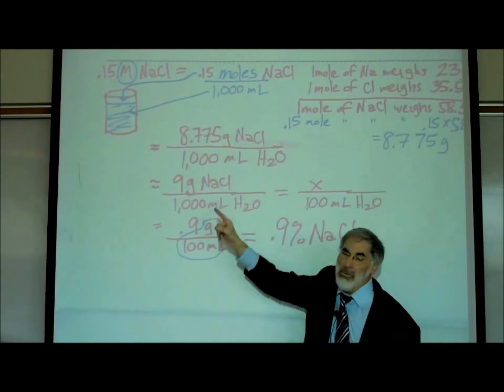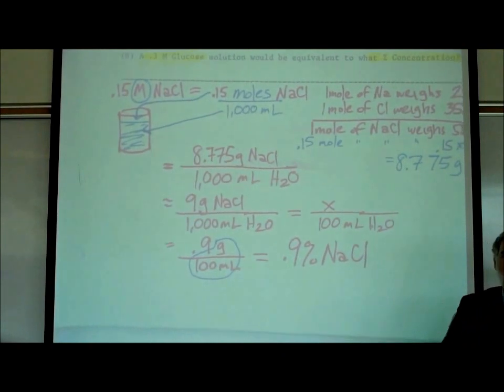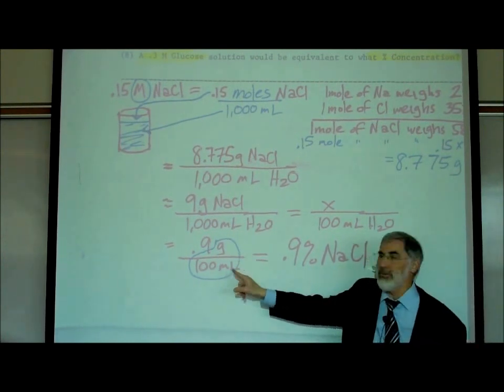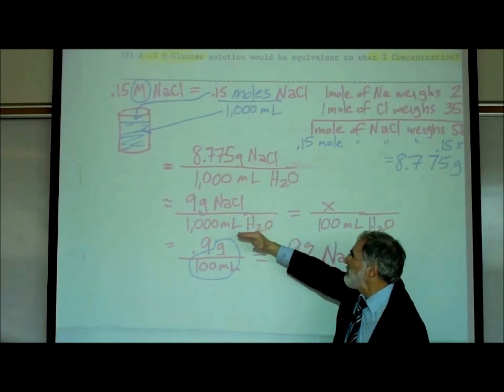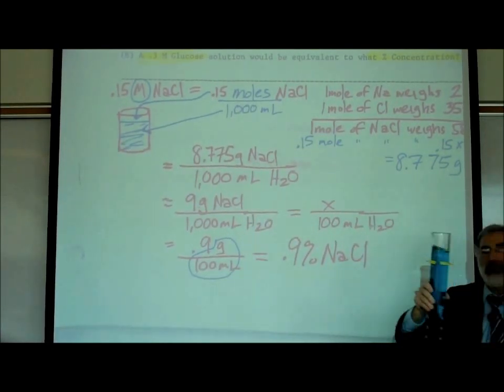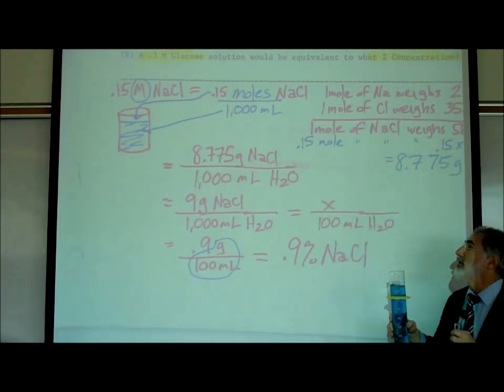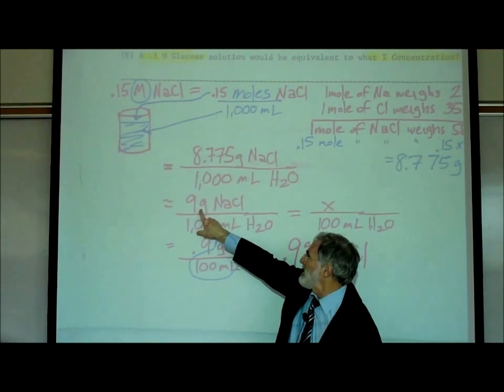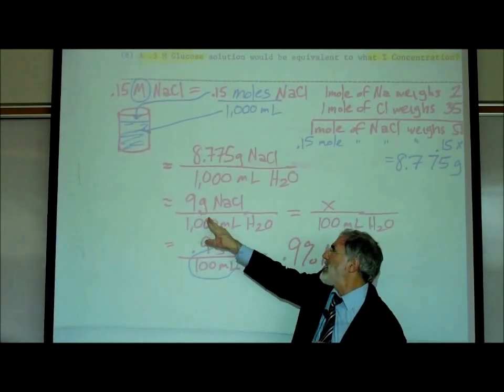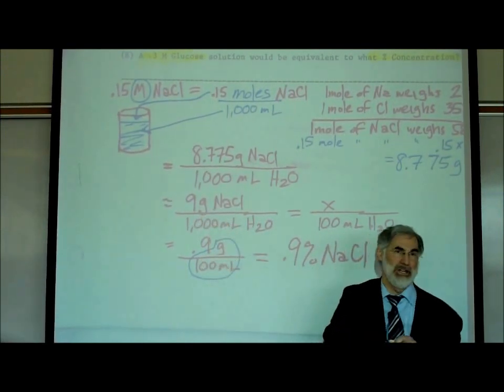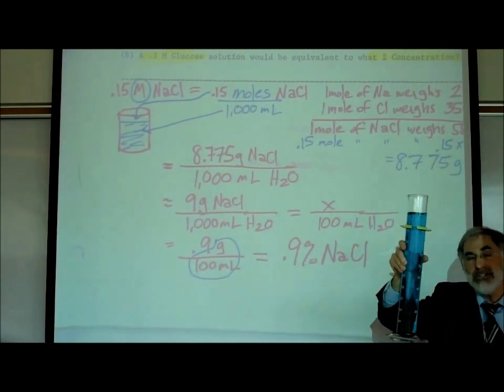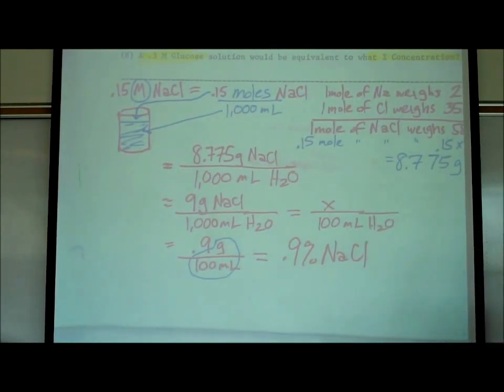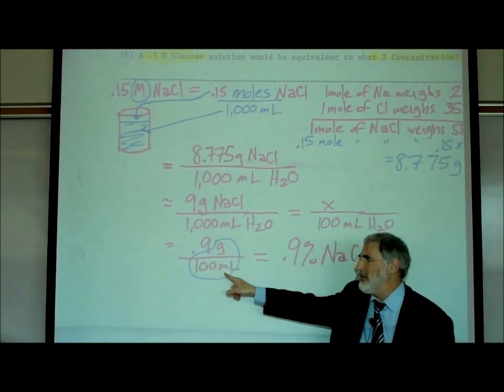If we know that a 0.15 molar salt solution is prepared by adding nine grams of salt to a thousand milliliters of water, and we want to convert that to percent, what does percent mean? Grams per hundred milliliters. So nine grams of salt is to a thousand milliliters, as how many grams of salt would be in a hundred? Whether you solve for x by cross-multiplying, or simply you appreciate that if you move the decimal point on the top and bottom one place to the left, you go from nine grams to a thousand to point nine grams per hundred. Therefore, since we have the abbreviation that stands for grams per hundred milliliters, it becomes 0.9%.